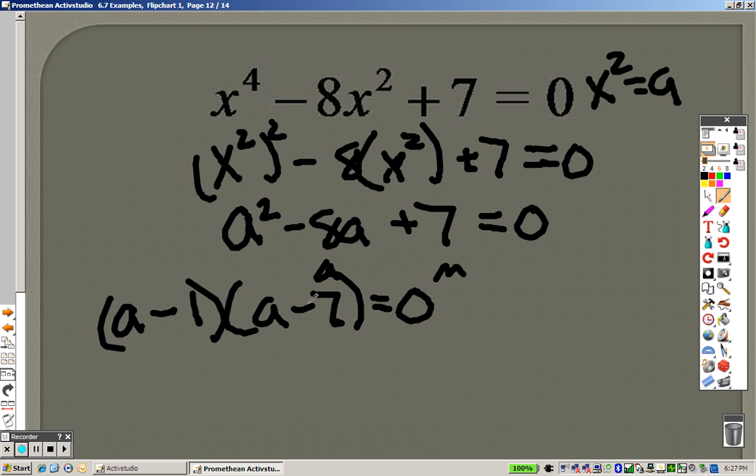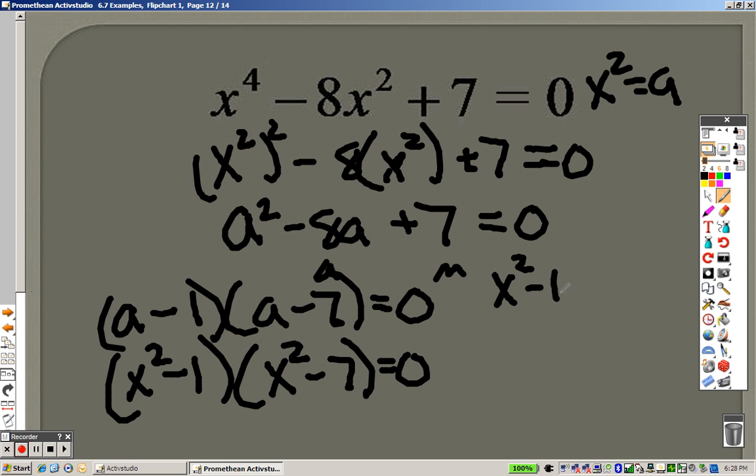I could have a negative 1, and I could have a negative 7. But, instead of having the a's, remember, it's x squared. So, it's x squared minus 1 and x squared minus 7. So, when you do this, we have x squared minus 1 equals 0. I can solve that, which we just did in the last problem. So, I get x squared equals 1. Square root them. So, I get x equals plus or minus 1.